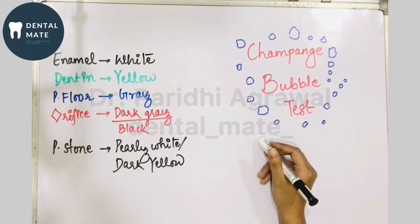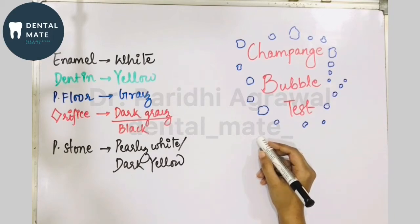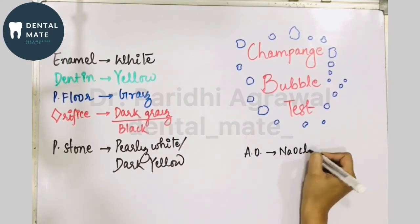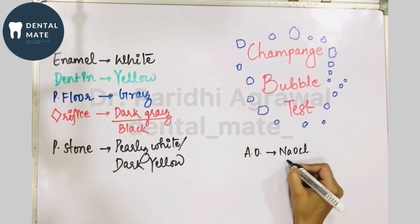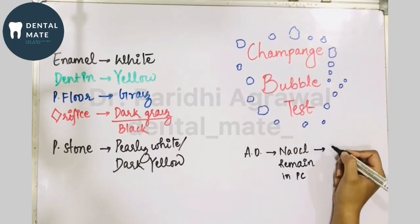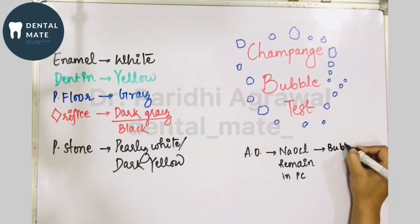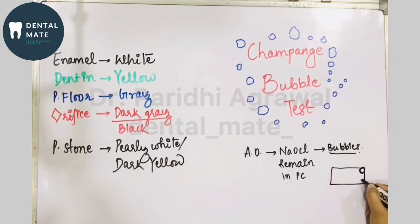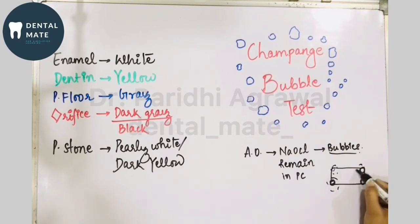After the access cavity preparation, if you are placing the sodium hypochlorite solution in the pulp chamber and allowing it to remain there for some time, what happens is there is an appearance of bubbles frothing out. The orifice is clear but not completely visible, so what can be seen is bubbles frothing out from the floor of the pulp chamber. This is indicative of the presence of the root canal orifice.